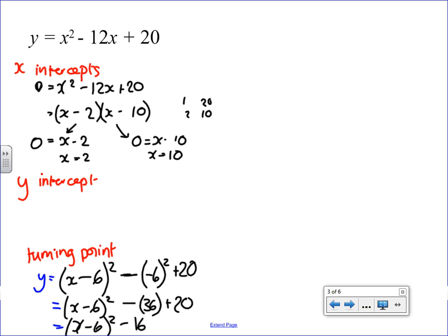Cool. Y-intercept when x is 0, so y equals 0 squared minus 12 plus 0 plus 20, which is 20. That's all the information I need. 1, 2, 3. Well, we haven't extracted the turning point yet.